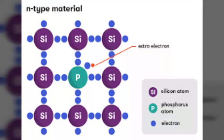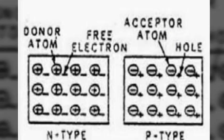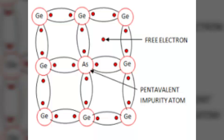The first type is N-type semiconductor. When a small amount of pentavalent impurity is added to a pure semiconductor, it is known as N-type semiconductor. The addition of pentavalent impurity provides a large number of free electrons in the semiconductor crystal. Typical examples of pentavalent impurities are arsenic and antimony. Such impurities which produce N-type semiconductor are known as donor impurities. When arsenic is added to a germanium crystal, a large number of free electrons become available in the crystal.